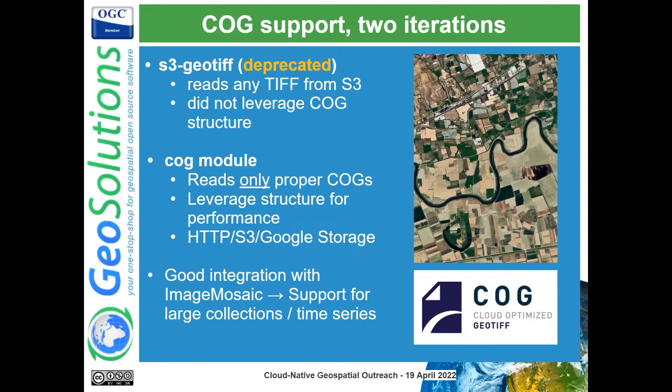There is a plugin floating around that allows using a STAC server as an index for the Image Mosaic, so you can use the STAC API — not a STAC catalog but a STAC API — to power the Image Mosaic on the fly.